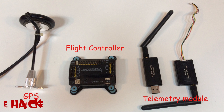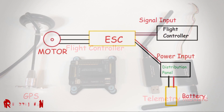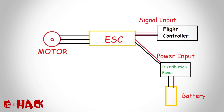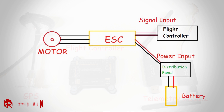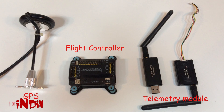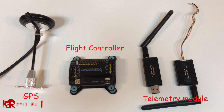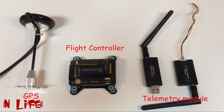This is the flight controller, which gives signal to the signal input of the ESC. The flight controller also has a compass, gyro, and GPS for stable flight. It also has a telemetry module so that you can control your quadcopter from your laptop.